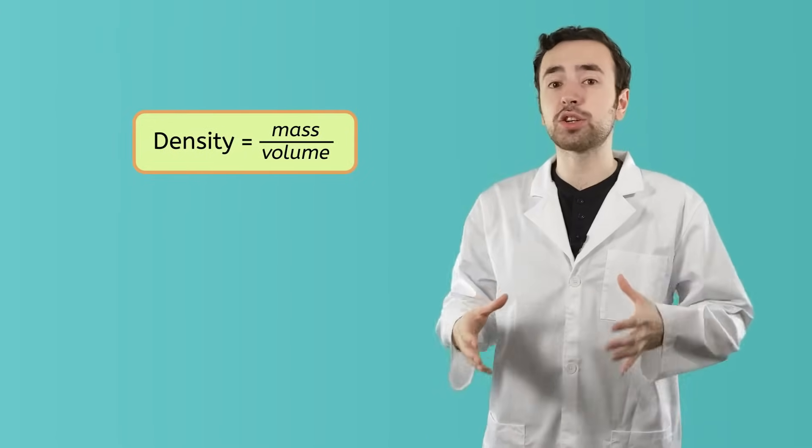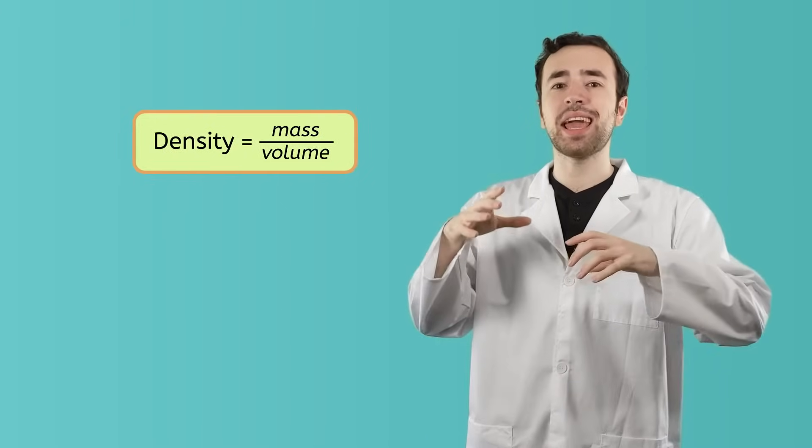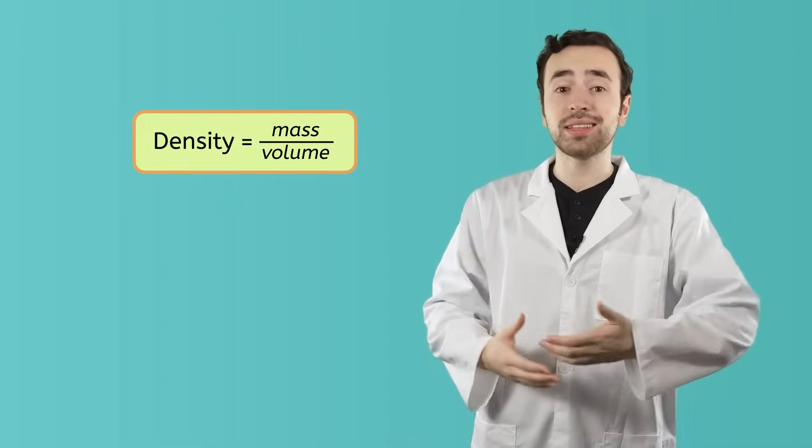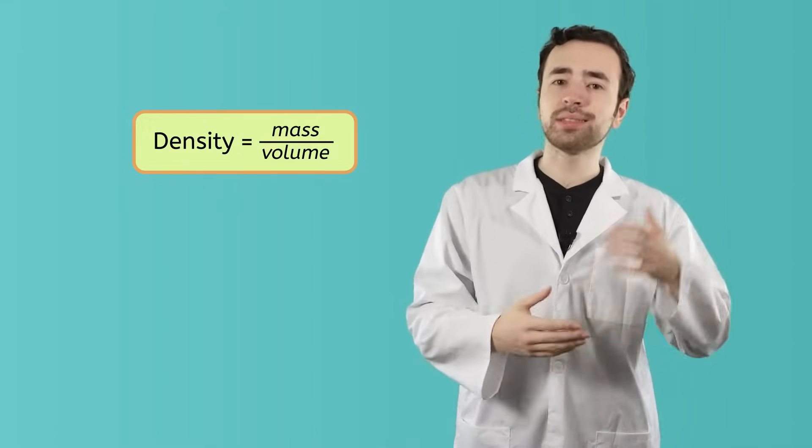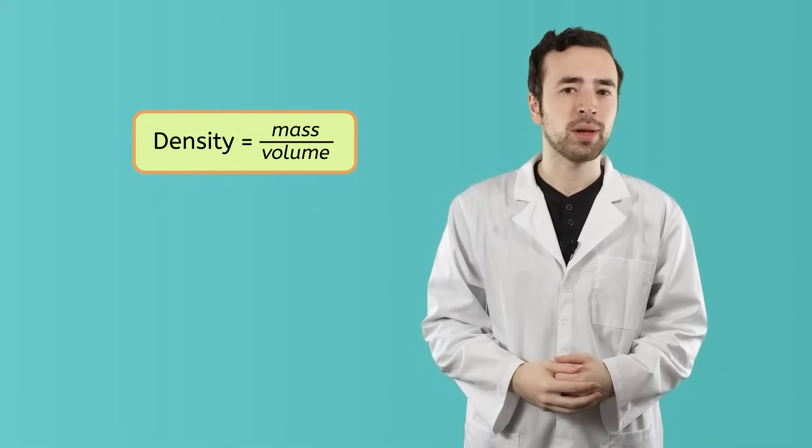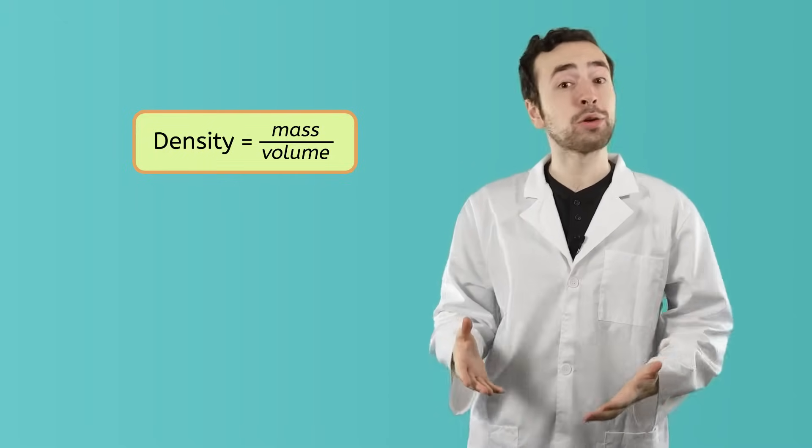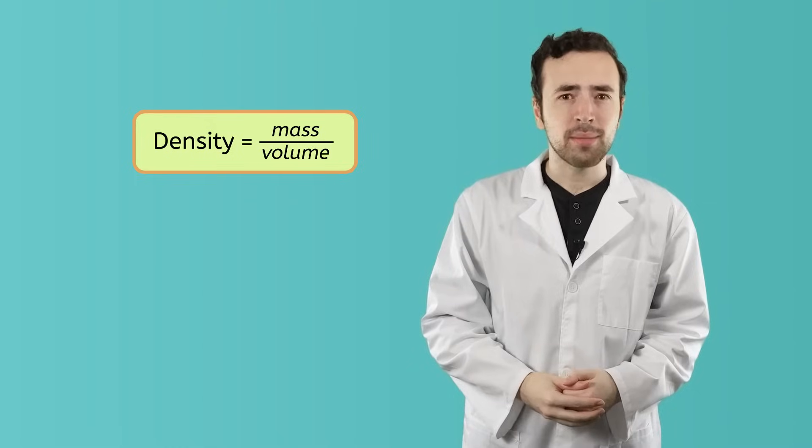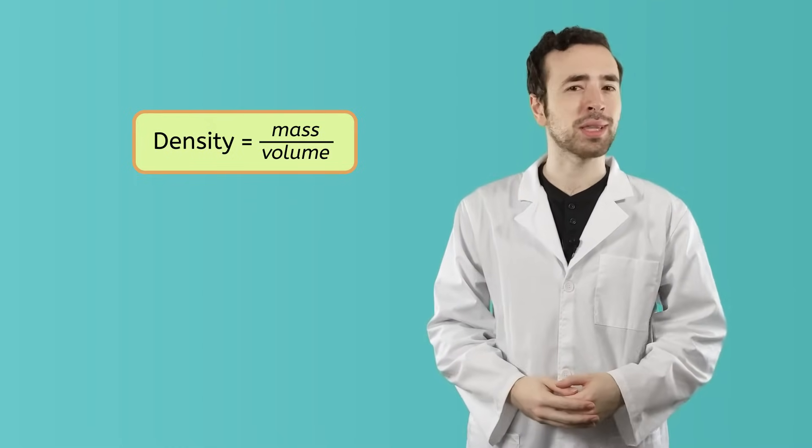Density is the measure of how much mass is in a certain area. So, to find an object's density, we can take its mass and divide it by its volume. For more information on how to calculate an object's density, be sure to check out the printed activities for this lesson.